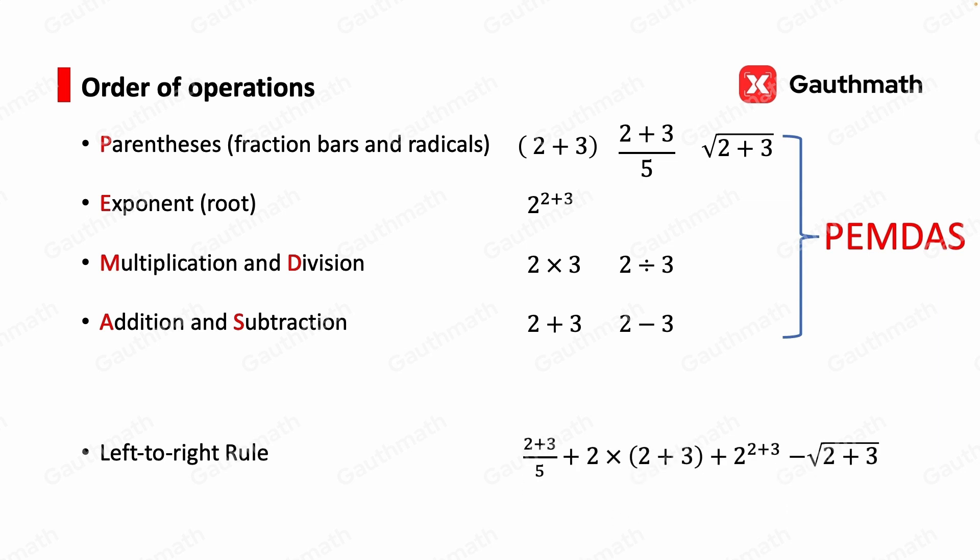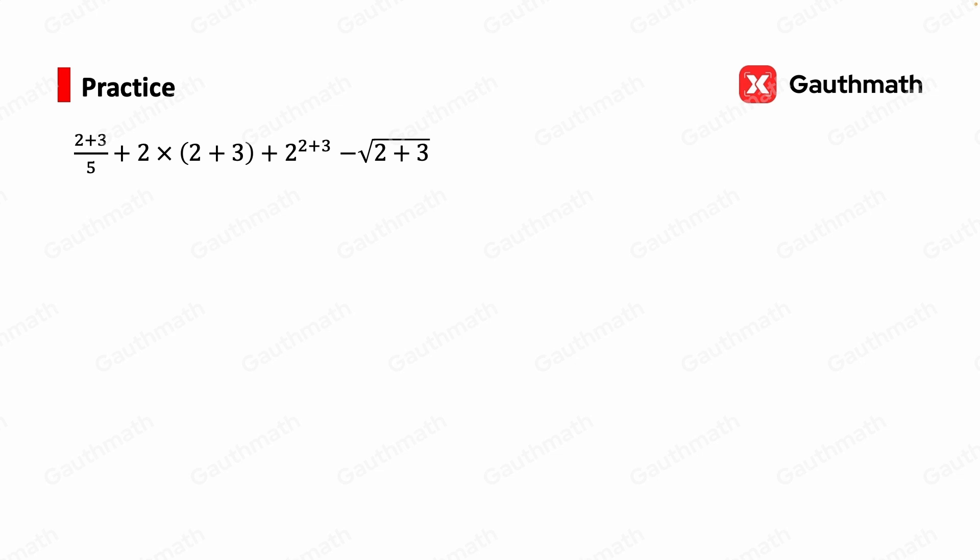Here is an example. Okay, so in this example, we're going to follow PEMDAS. First, P, parentheses, grouping symbols. And we have all three. Okay, we have fraction bars, we have parentheses, and we have radical symbol. So find the result or sum in each.